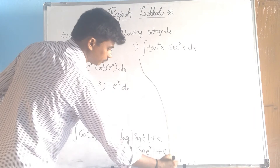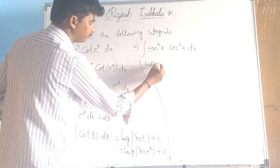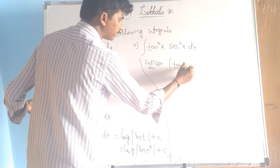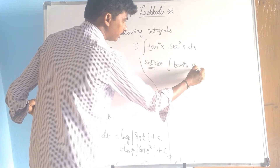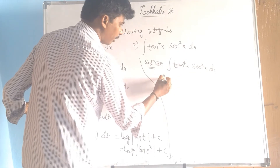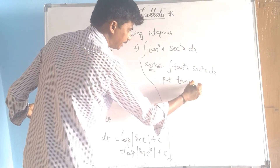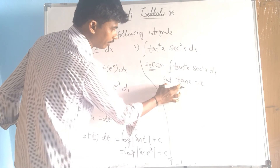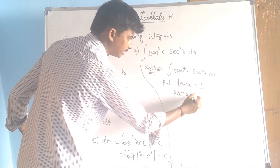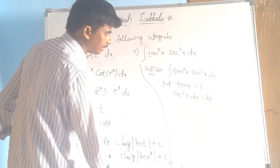Next, solution number 2: integral of tan⁴x·sec²x dx. Now put tan(x) equal to t. Derivative of tan(x): sec²x dx equals dt.